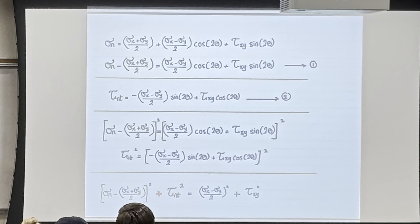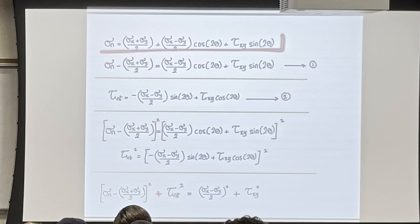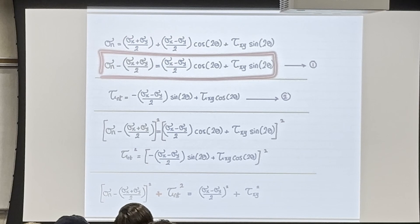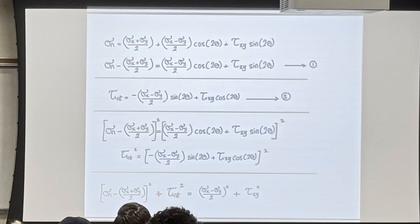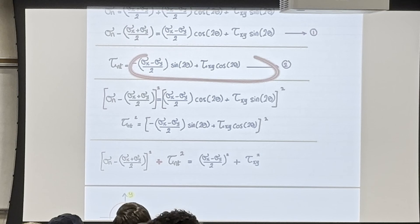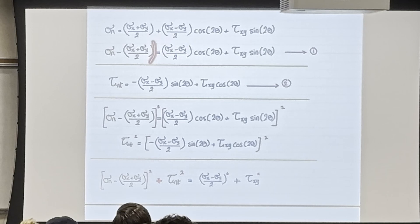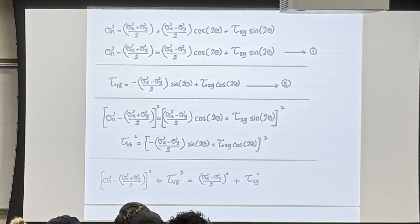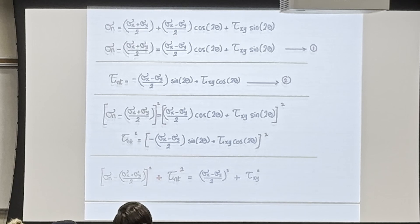Taking the σ_n equation and rearranging, I move σ_x+σ_y over 2 to the other side: σ_n minus (σ_x+σ_y)/2 equals that expression. I call this equation (1), and I do the same for the τ_nt equation. Then I take the square of both sides and add them together — squaring this term and adding it to τ_nt squared — and you end up with the Mohr's Circle equation.